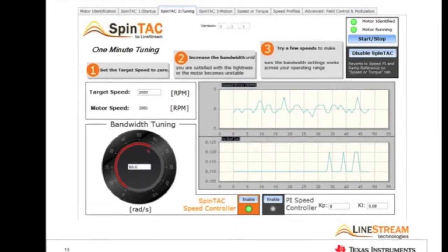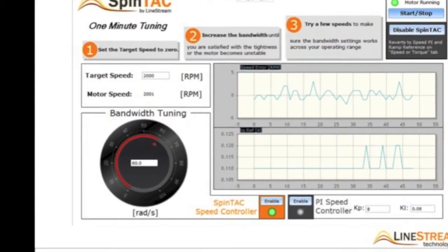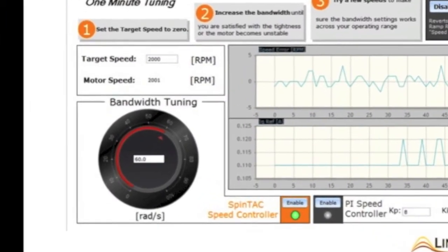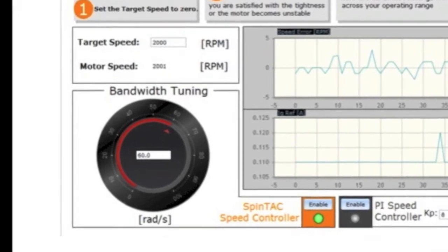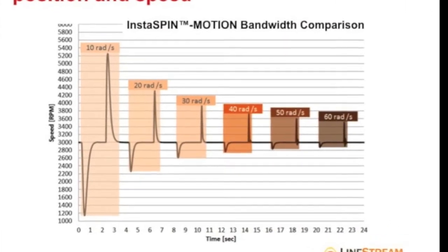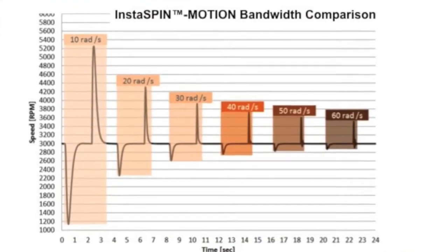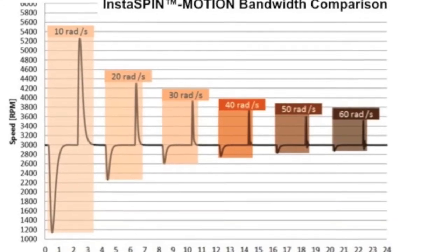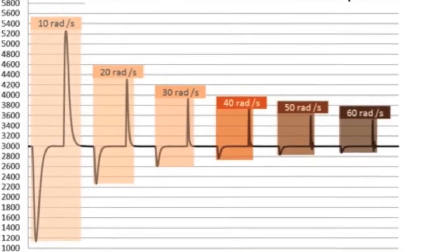Tuning is accomplished with a single tuning parameter called bandwidth. Bandwidth allows us to adjust the controller from soft to stiff response. This graph shows that as the bandwidth is increased, the controller response becomes stiffer. This single parameter can control both position and speed and it works over the entire operating range.